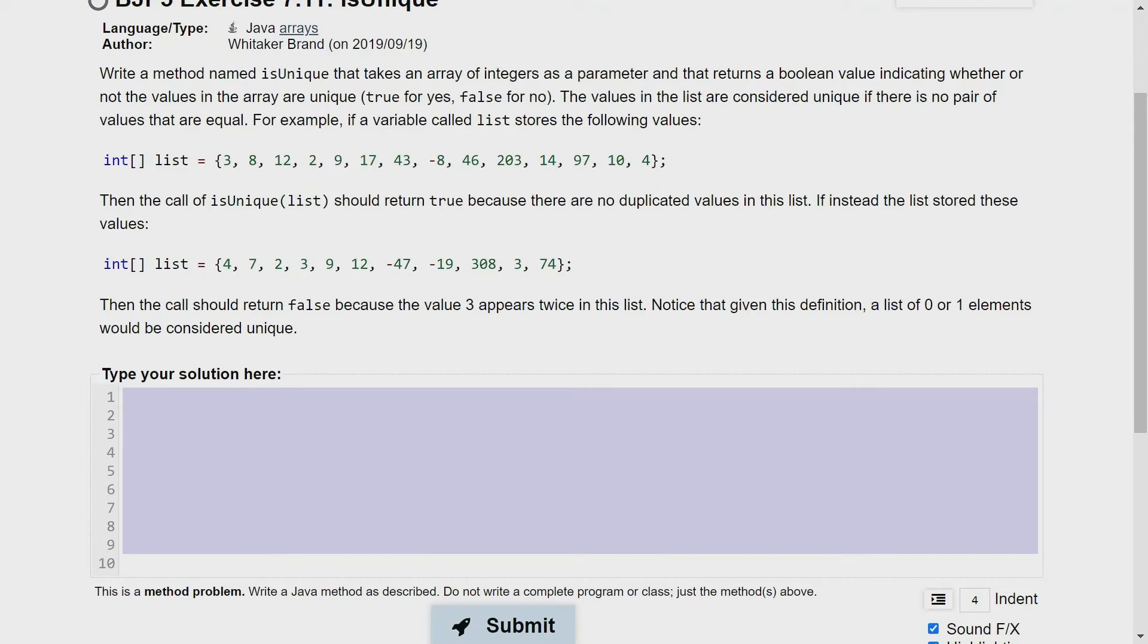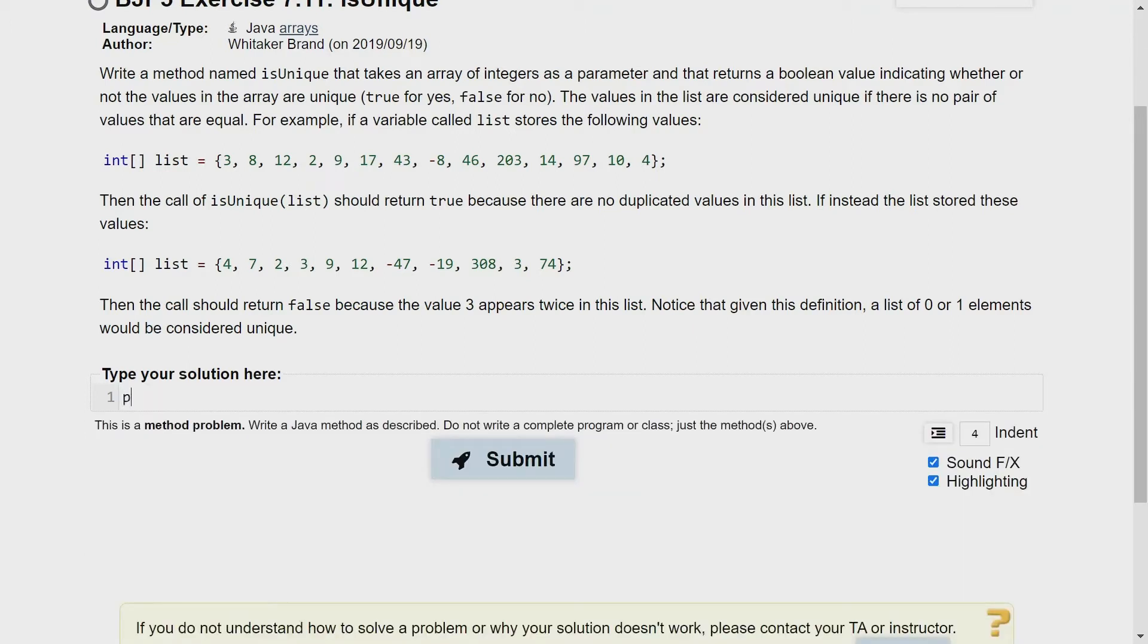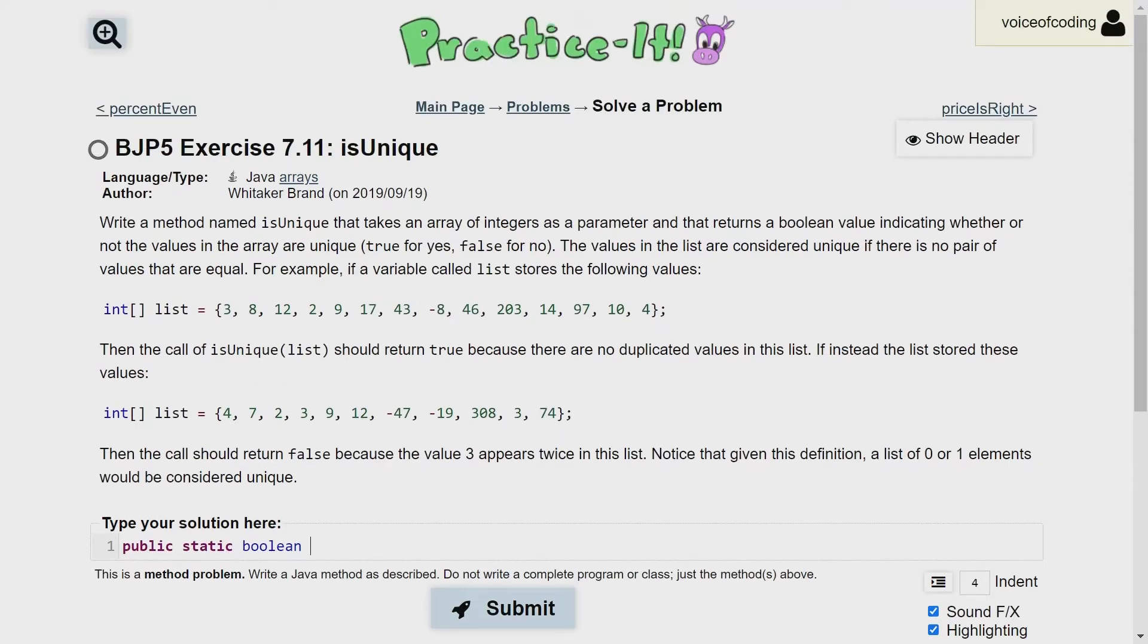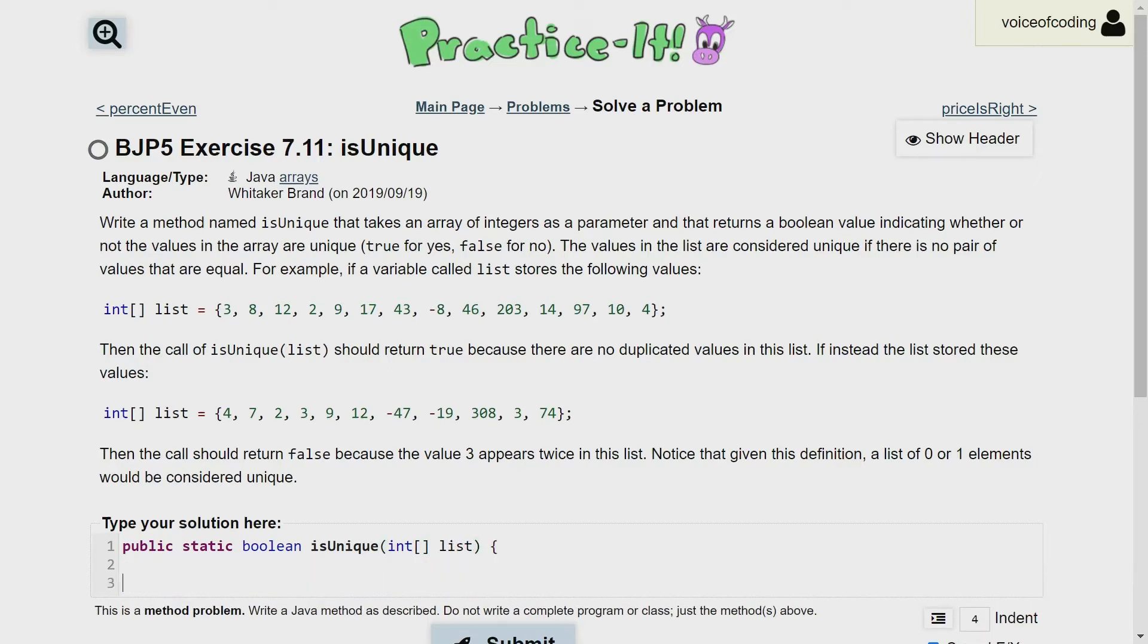So let's go ahead and create our method header. This is going to be a public static method. And because we're going to be returning true or false, that's going to be a boolean value. So for our return type, we're going to have boolean and our method name is going to be isUnique. Now note that isUnique is going to be taking in a parameter of an array of integers. So we're going to write that parameter. I'll be calling it list because the problem states list.